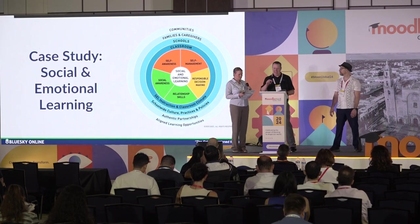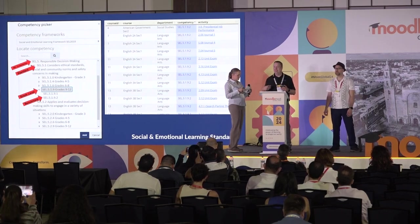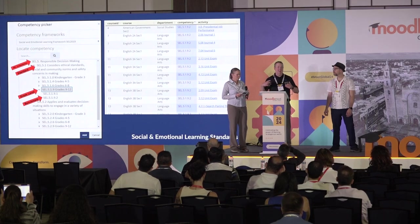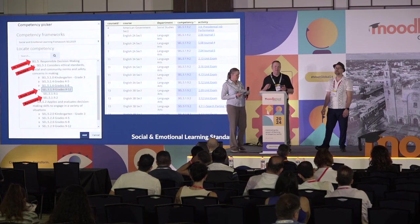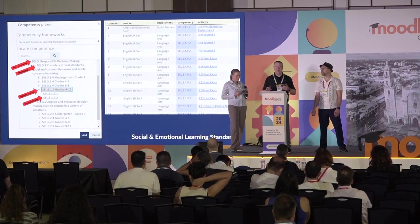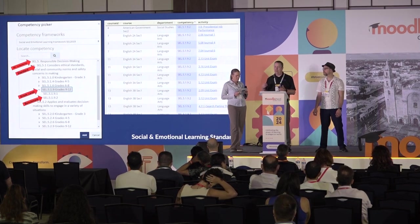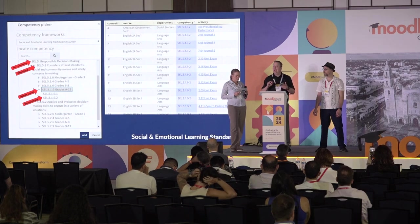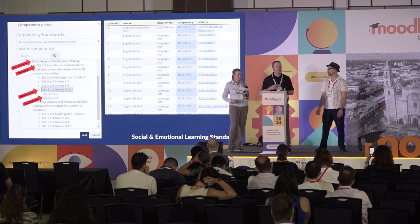Our school board said to do this across all subject areas, and teachers were worried about how — it wasn't their subject area. Using competencies in Moodle helped us administratively manage, monitor, and see where this was happening and where it wasn't, allowing us to ask questions why. Using that reporting and having it right in the content helped us figure out our path forward. Because it was live, we could quickly identify where we needed to adapt our strategy to reach full implementation.